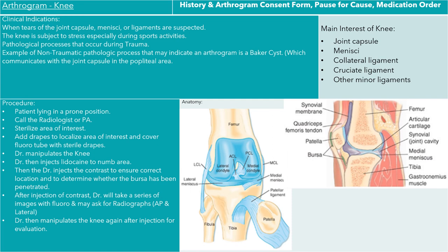Arthrogram of the knee. Again, you'll need your history, consent form, your pause for cause or timeout, and your medication order. Clinical indications: when tears of the joint capsules, menisci, or ligaments are suspected, the knee is subject to stress, especially during sports activities and traumatic pathologic processes. An example of a non-traumatic pathologic process is a Baker's cyst, which communicates with the joint capsule in the popliteal area.